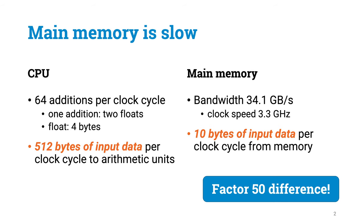But most applications will also need to read some input data from the main memory. And the main memory is slow, painfully slow. For example, if you are doing floating-point additions, a typical 4-core CPU can do 64 single-precision floating-point additions per clock cycle. Each addition takes two numbers, and these numbers take 4 bytes each. So each clock cycle you will need to feed 64 x 2 x 4 bytes to the arithmetic units to keep them busy. And that's 512 bytes, half a kilobyte of data per clock cycle. How much data can you get from the main memory to the CPU per clock cycle? A typical number is something as small as 10 bytes, so there is a factor of 50 difference.